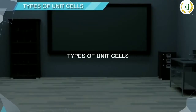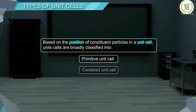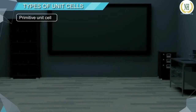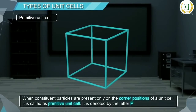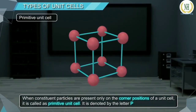Types of Unit Cells: Based on the position of constituent particles in a unit cell, unit cells are broadly classified into primitive unit cell and centered unit cells. When constituent particles are present only on the corner positions of a unit cell, it is called a Primitive Unit Cell. It is denoted by the letter P.